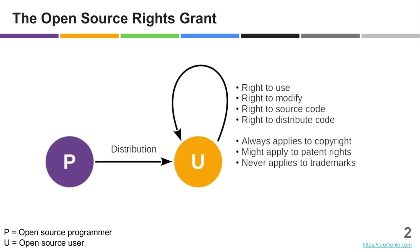The right to modify it and use it for free in modified form, and to pass it on to third parties. These are the rights that everyone can get by way of an open source license. There are also potential obligations depending on how the software is used, but we'll get to that later.